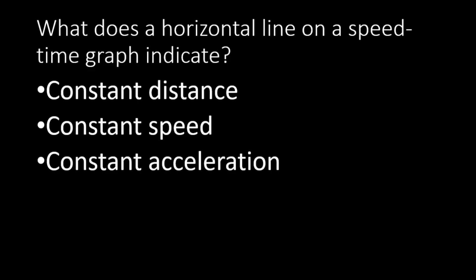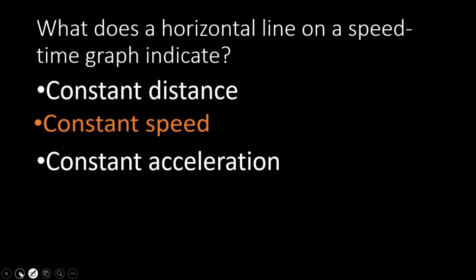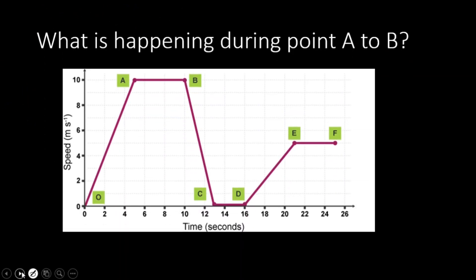The first question: what does a horizontal line on the speed-time graph indicate? The correct answer is it indicates constant speed. Next question: what is happening during point A to B? If you look at points A to B, this is a horizontal line parallel to the time axis, so here we can say that the speed is constant.